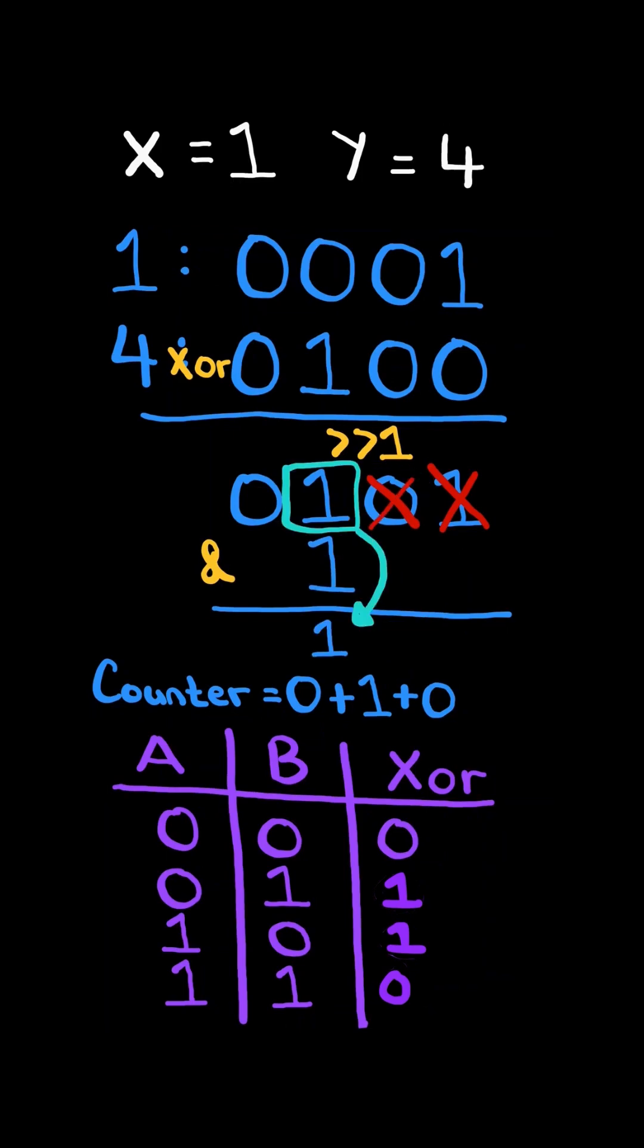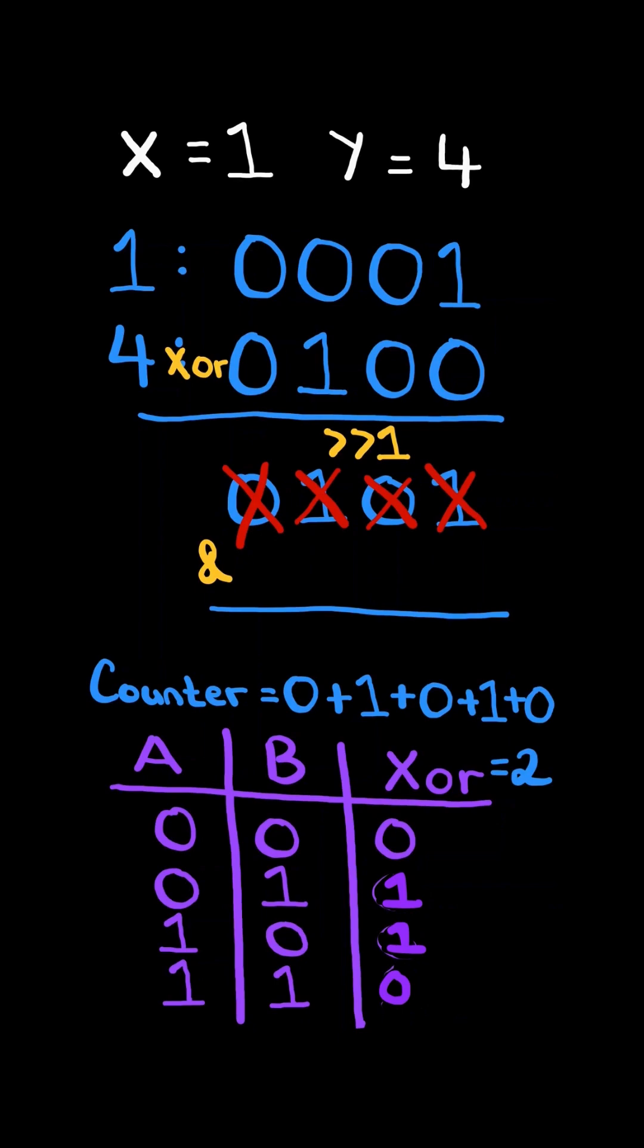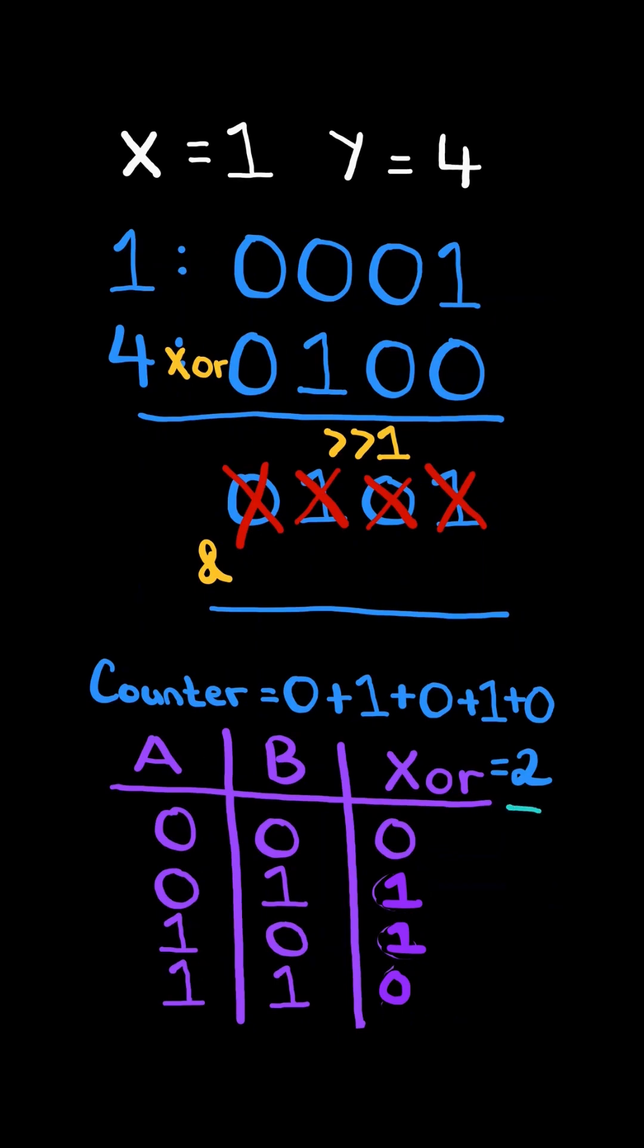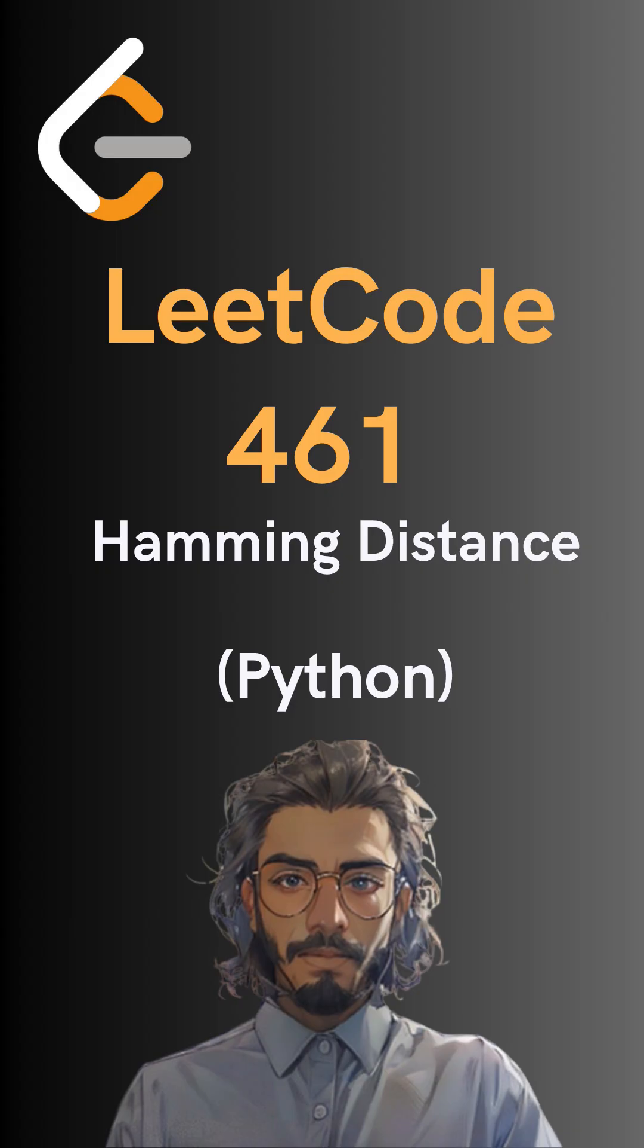We bitwise AND by 1 to get the last bit, add it to counter, and right shift by 1. We continue the algorithm. Once we go through all the bits, counter will equal the Hamming distance. Here's the code to do so. Please like and follow for more.